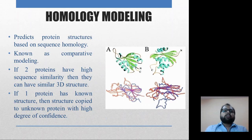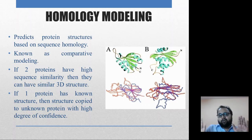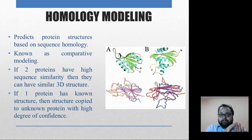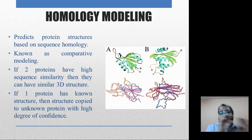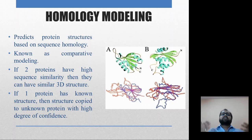To explain more clearly: homology modeling helps predict the protein structure based on sequence homology. It is also known as comparative modeling — we are comparing our unknown sequence with a highly identical known sequence, and when we compare the sequences we are also going to compare the structures. If two proteins have a high sequence similarity, then they have a similar three-dimensional structure.